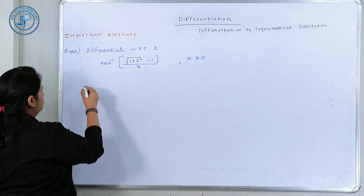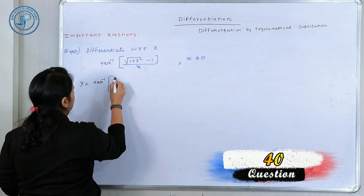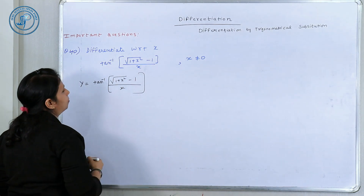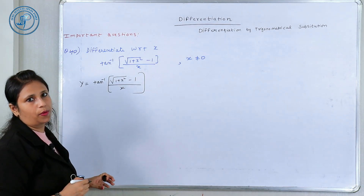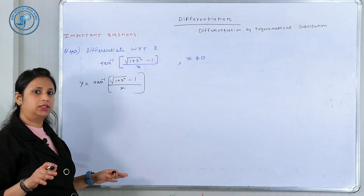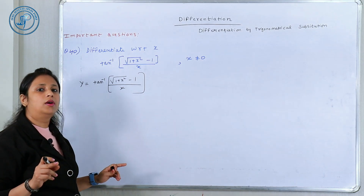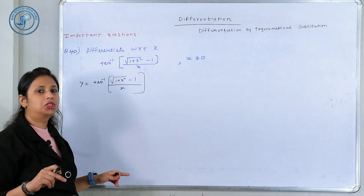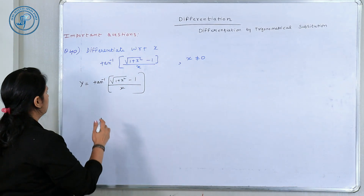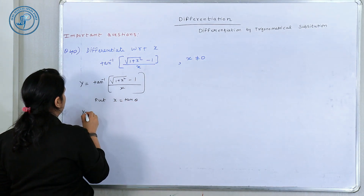Let's start the next question: y = tan inverse of (√(1 + x²) − 1)/x. As I just told you, if you have 1 + x² and it doesn't fit double or triple angle format, put x = tan θ. If 1 − x², put sin or cos; if x² − 1, put sec θ. So here I put x = tan θ.